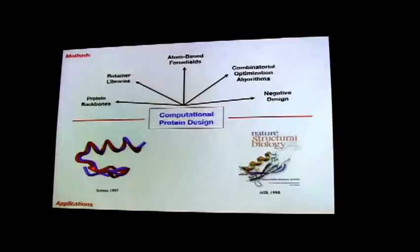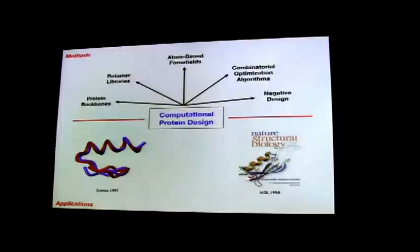To the extent that our force fields are somewhat accurate and we're doing reasonable optimization, we should be able to design protein variants that are thermostabilized relative to their wild-type counterparts. We showed back in 1998 that you can take a mesophilic bacterial protein, run these design calculations, and generate variants that are hyper-thermostabilized relative to wild-type — some with melting temperatures well above 120 degrees Celsius.